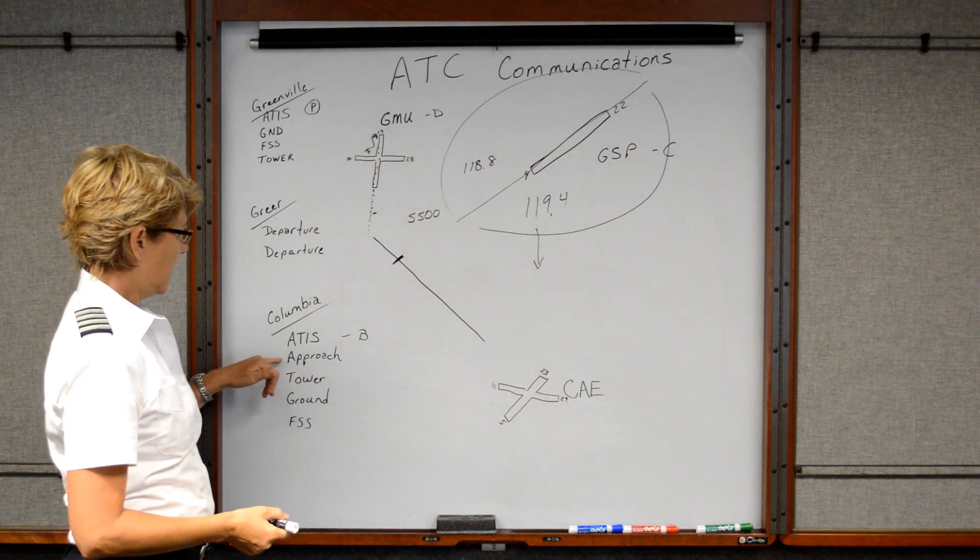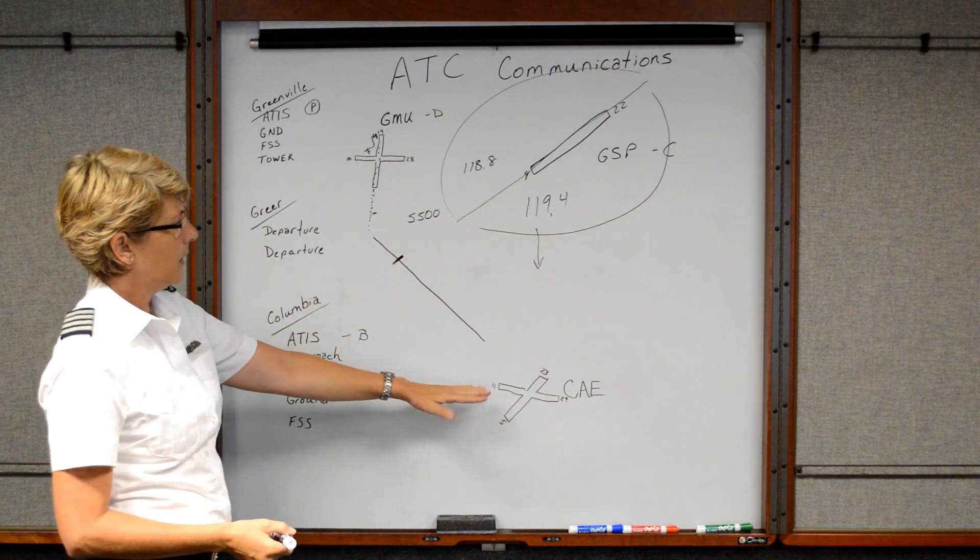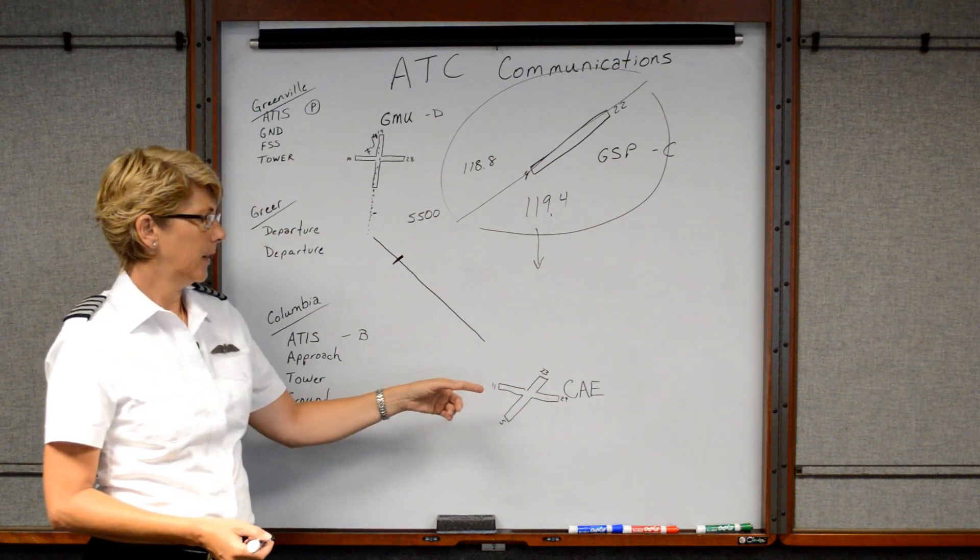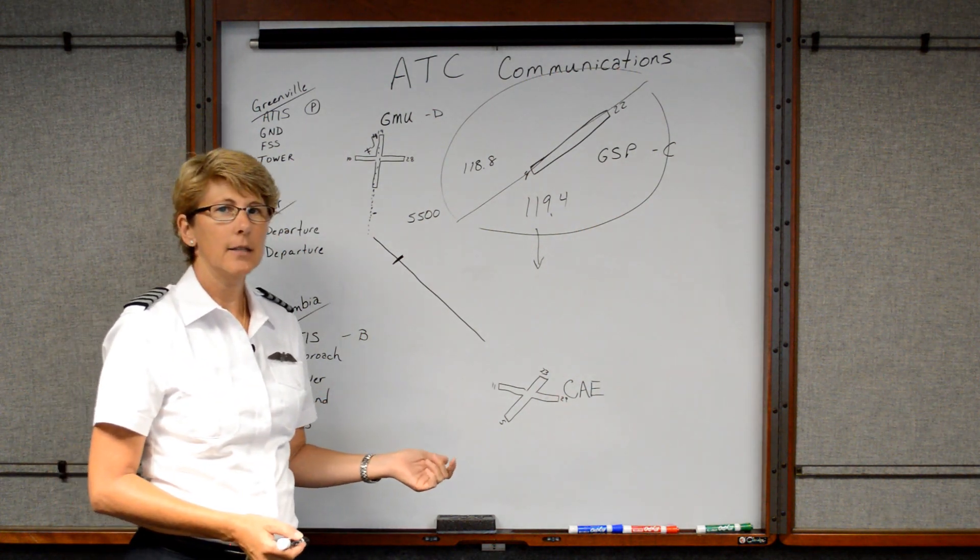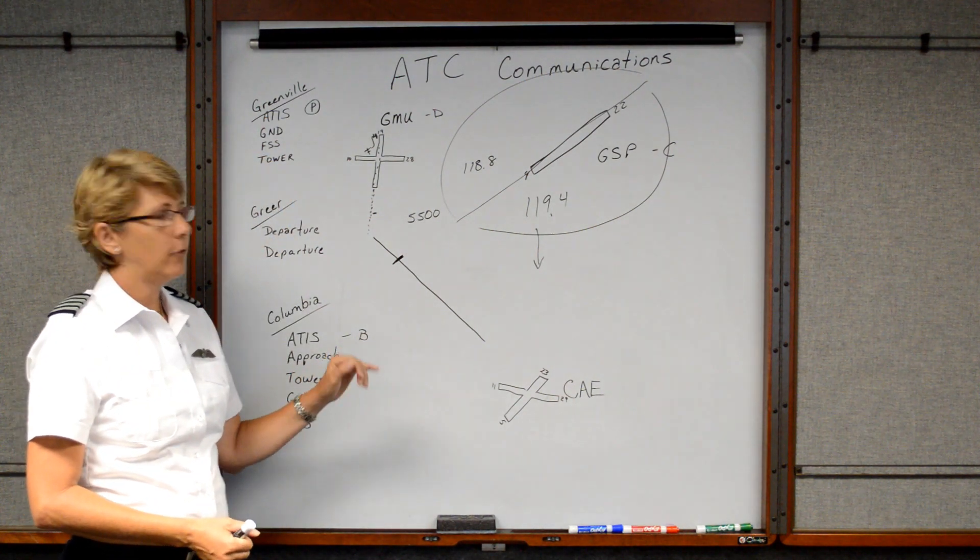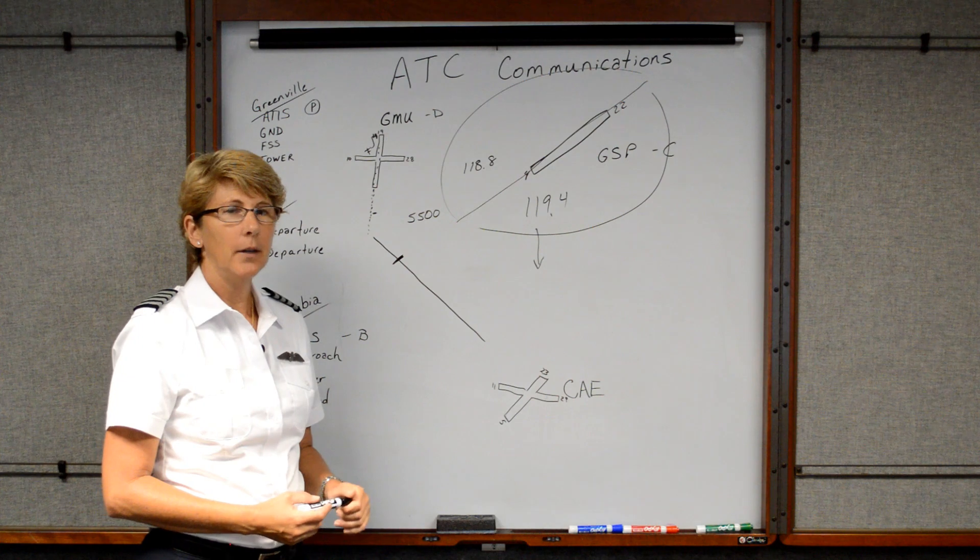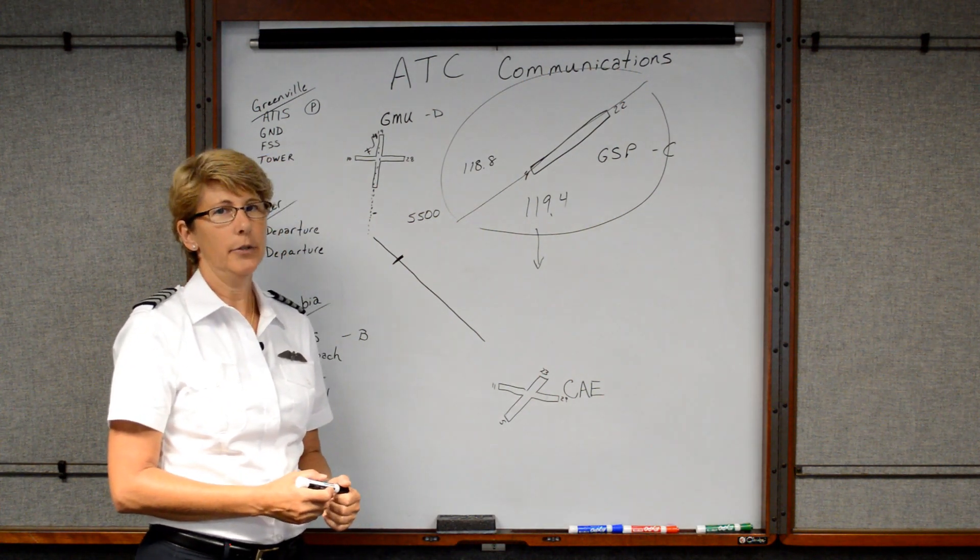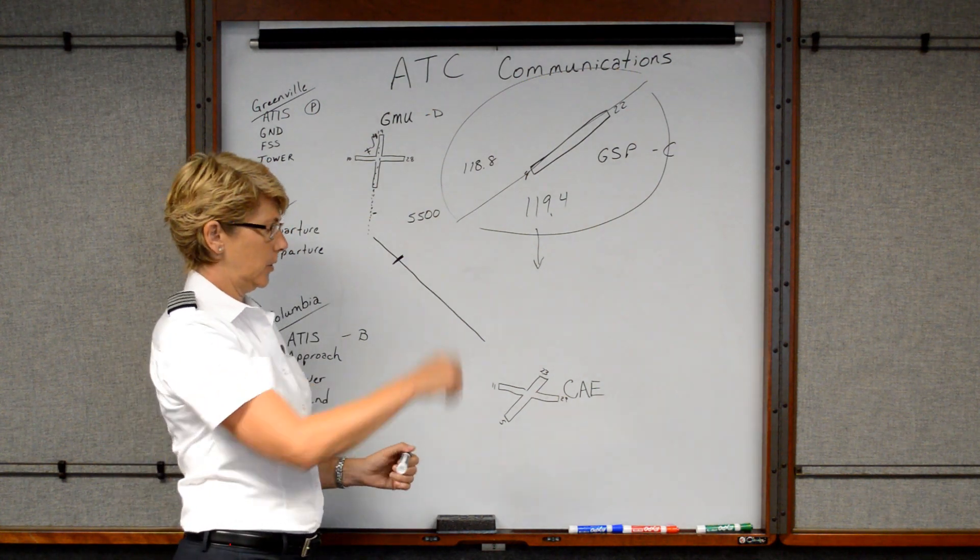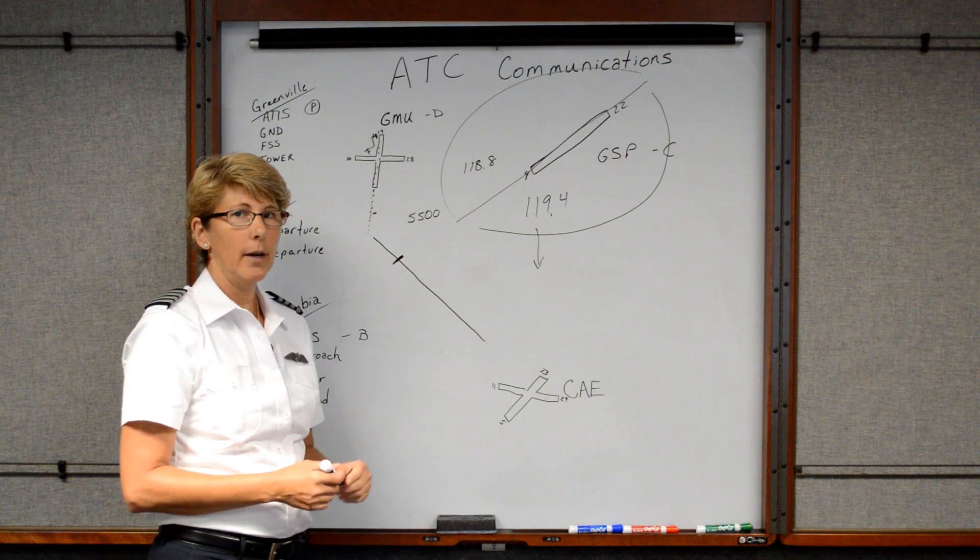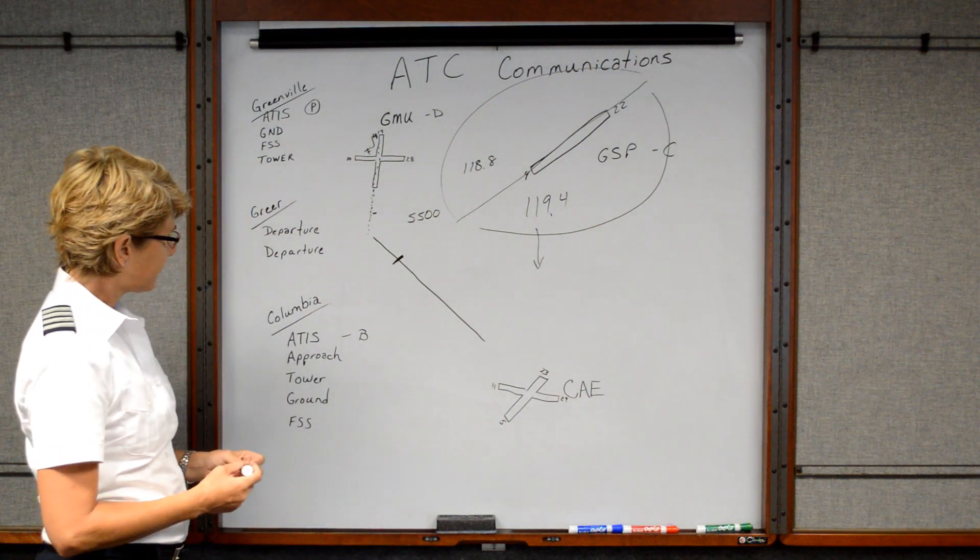But anyways, so Greer is going to hand us off to Columbia and we always check in with our altitude. So we would say something like Columbia approach, Skyhawk eight, seven, zero Sierra Papa information Bravo, 5,500 feet. And then they usually say something like radar contact. And then they usually give you an updated altimeter setting that you can adjust your Colesman window to be sure that your equipment matches what's going on in the local environment there.